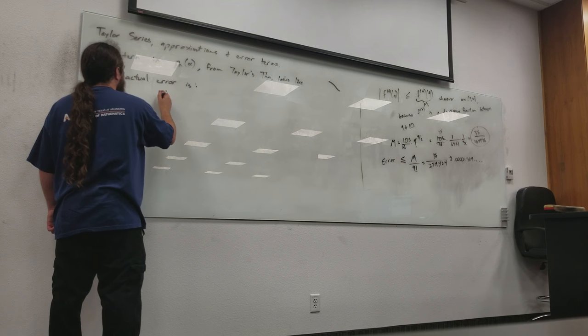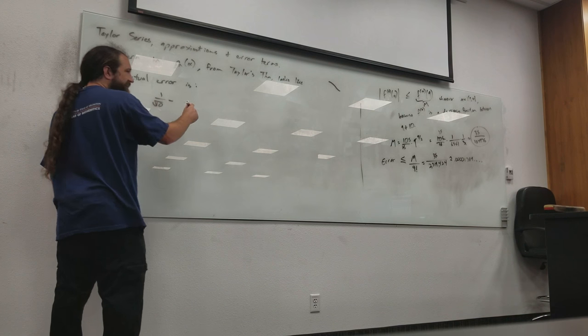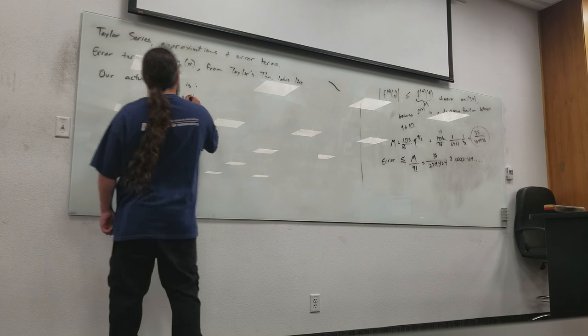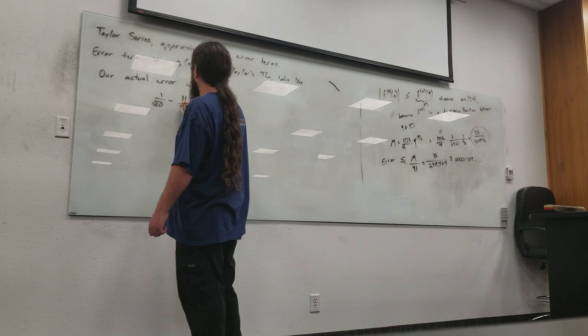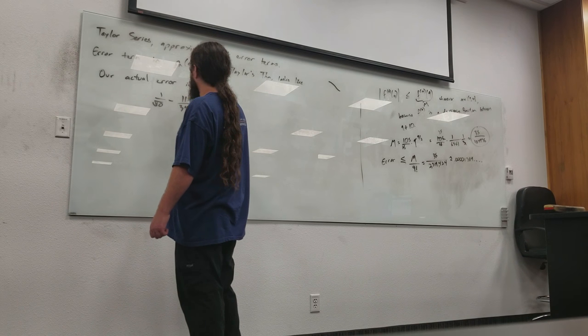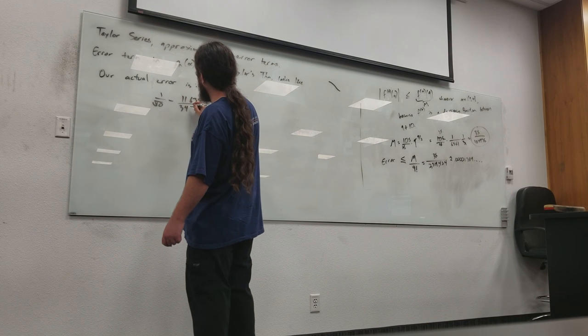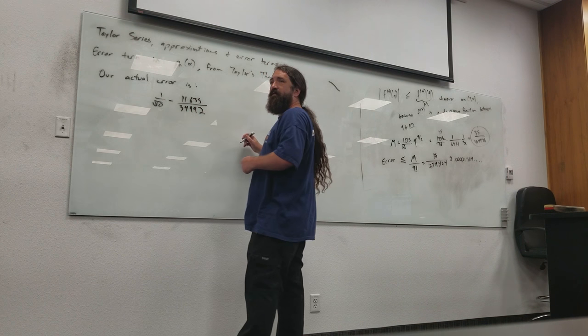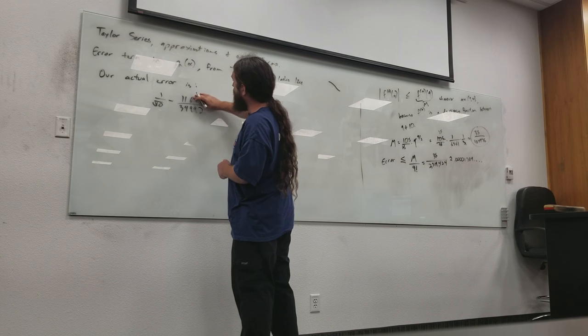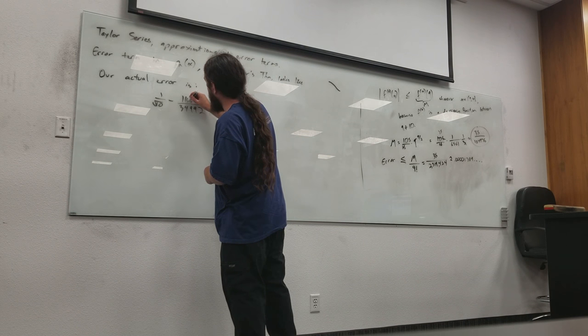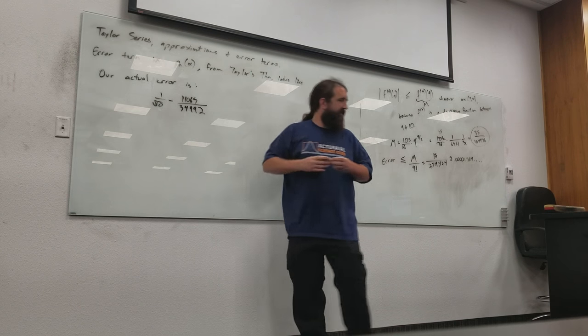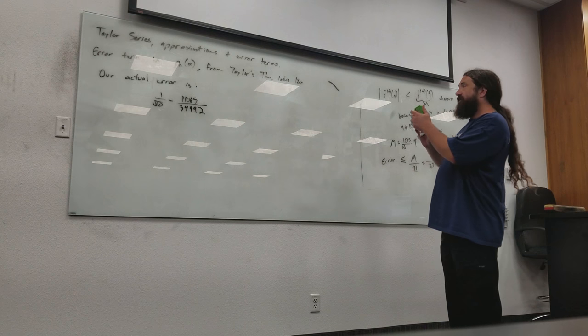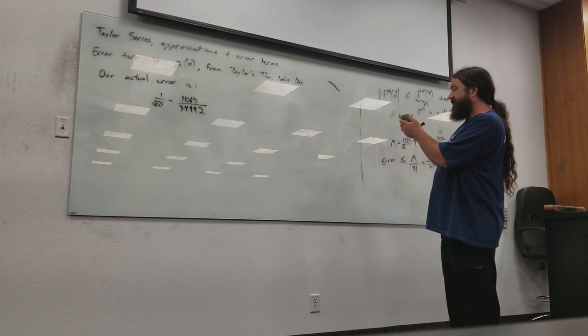Our actual error is, well, it's 1 over square root of 10 minus, what was that fraction that we came up with? Somebody write that down. She's all on it. Alright. Say that again, very slowly. 92? So, is this right? 65. 11065. Okay. Alright. So, let's take a look at that. See what our actual error is. 11065 over...